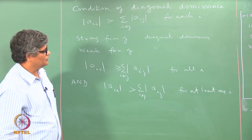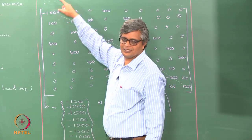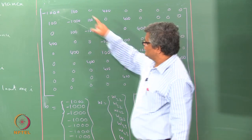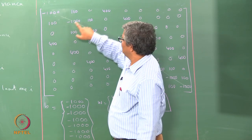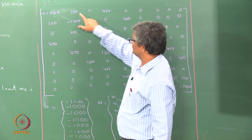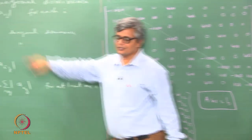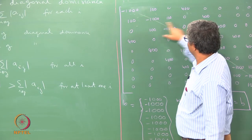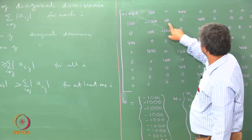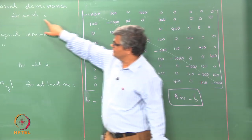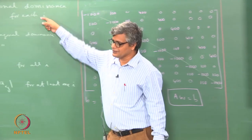Let us now see what this diagonal dominance means. Looking at the first row, which represents the equation for w22: the diagonal term magnitude is 1000 and the off-diagonal terms are 100 and 400, whose sum is 500. Since 1000 is greater than 500, this condition is satisfied. For the second equation, the diagonal is 1000 and the sum of off-diagonals is 600, so this is also satisfied. The third equation again has 1000 and the sum is 500, so the condition is satisfied again.